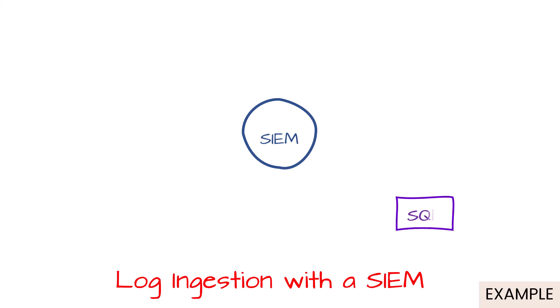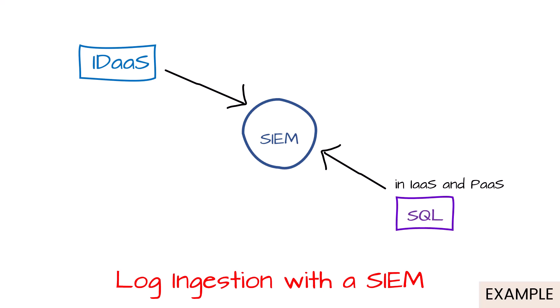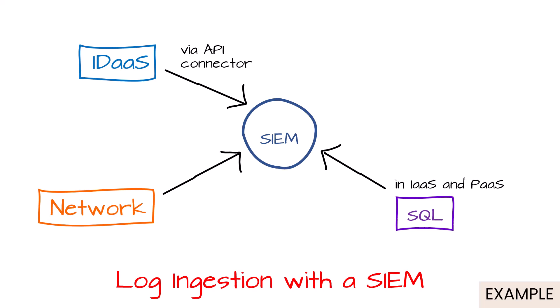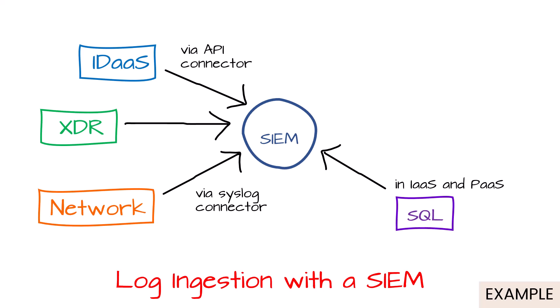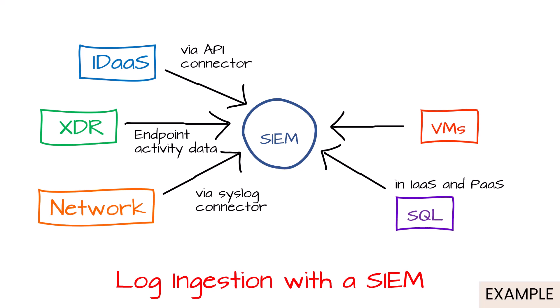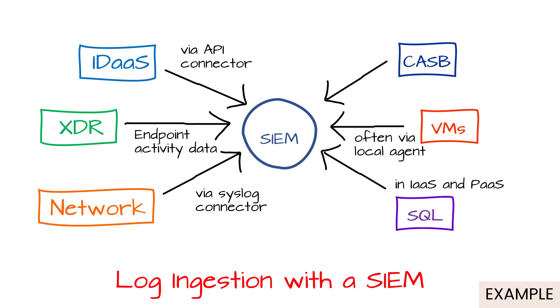The SIEM is our central point of aggregation. Our SQL database logs — whether IaaS or PaaS database instances — get dumped into our SIEM. Identity as a service, cloud identity platforms, and hybrid identity are typically pushed to the SIEM through an API. Network appliances, physical and virtual, typically via syslog. Our SIEM and XDR solutions handle endpoint activity data and virtual machines, where we deploy a local agent to send log data up — syslog from Linux, event logs from Windows. Then your CASB, which tracks protected data usage, sends usage alerts and events to the SIEM. Many SIEM solutions will have dozens, if not hundreds, of connectors.